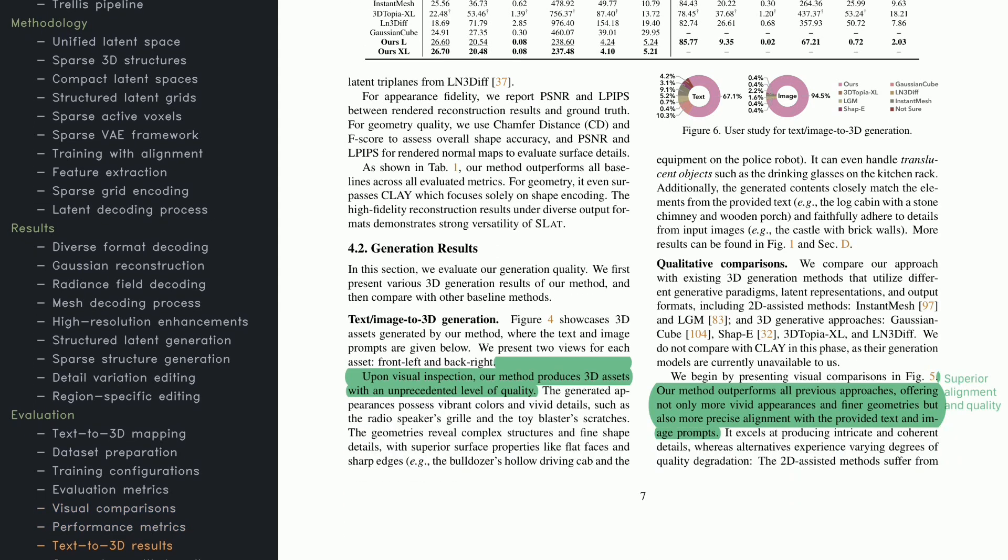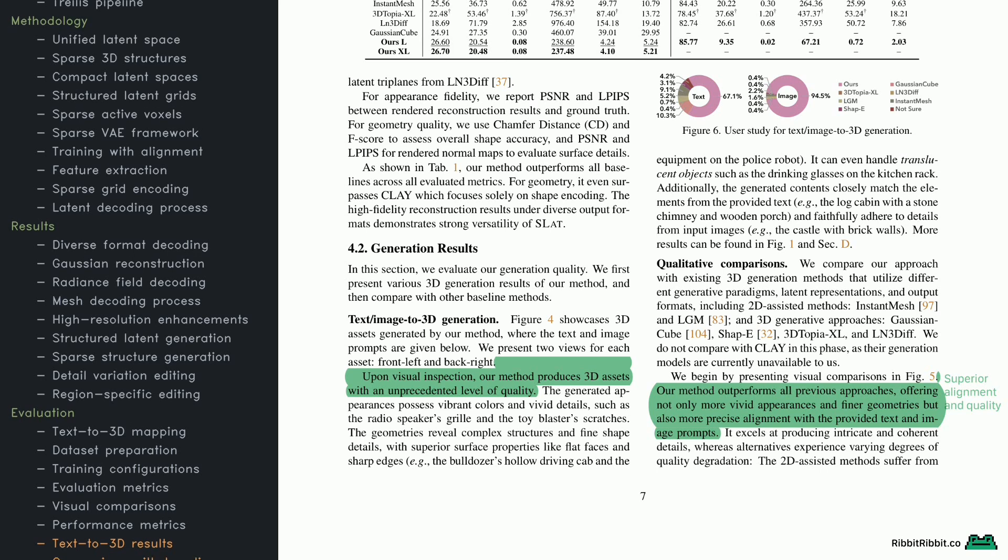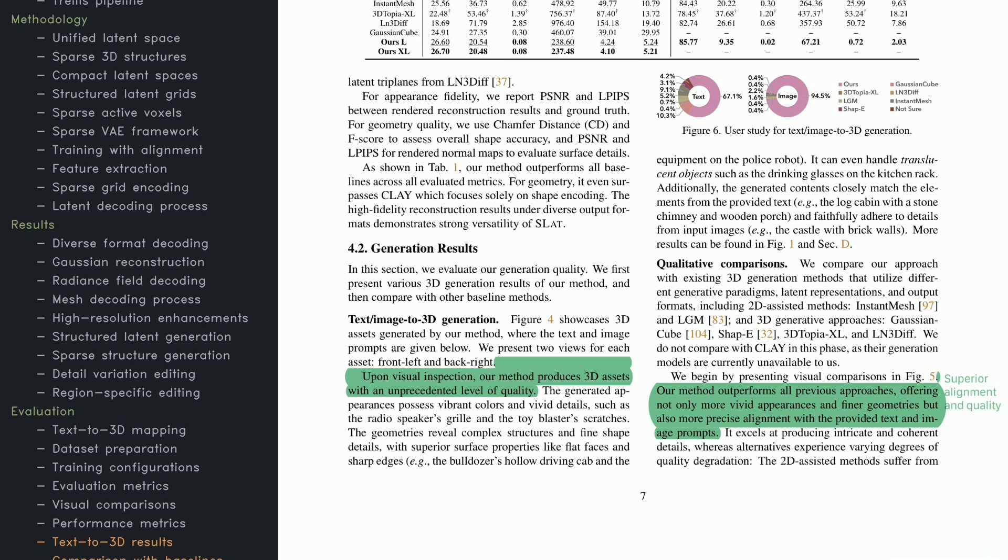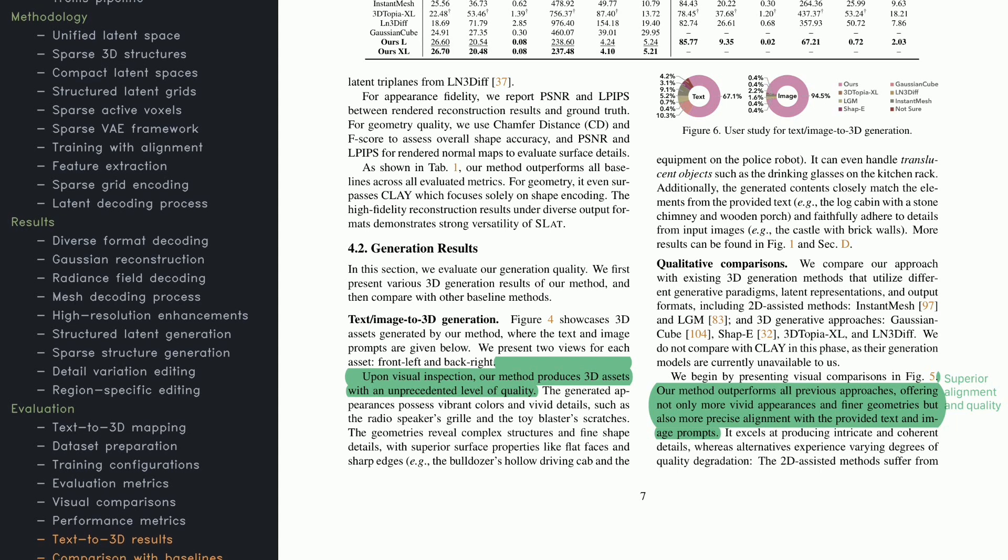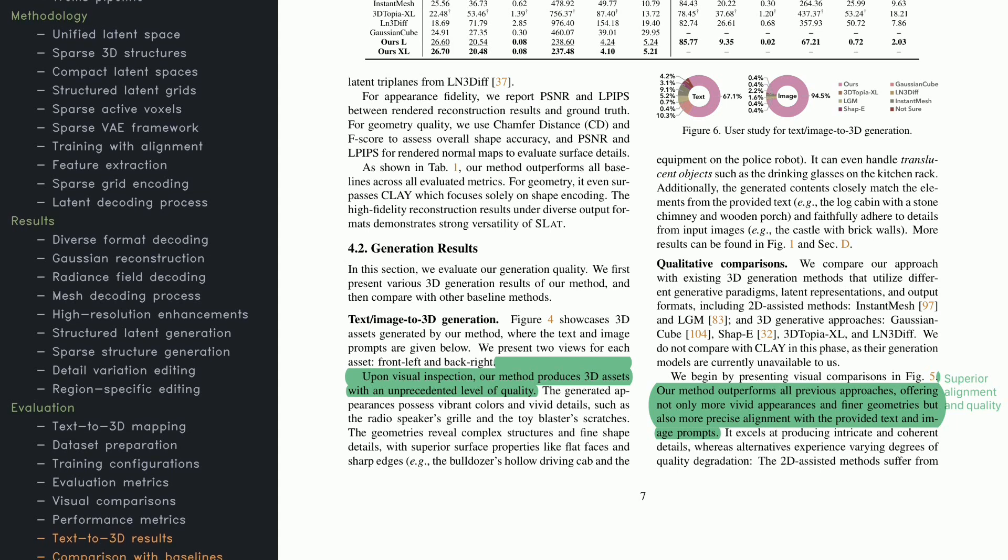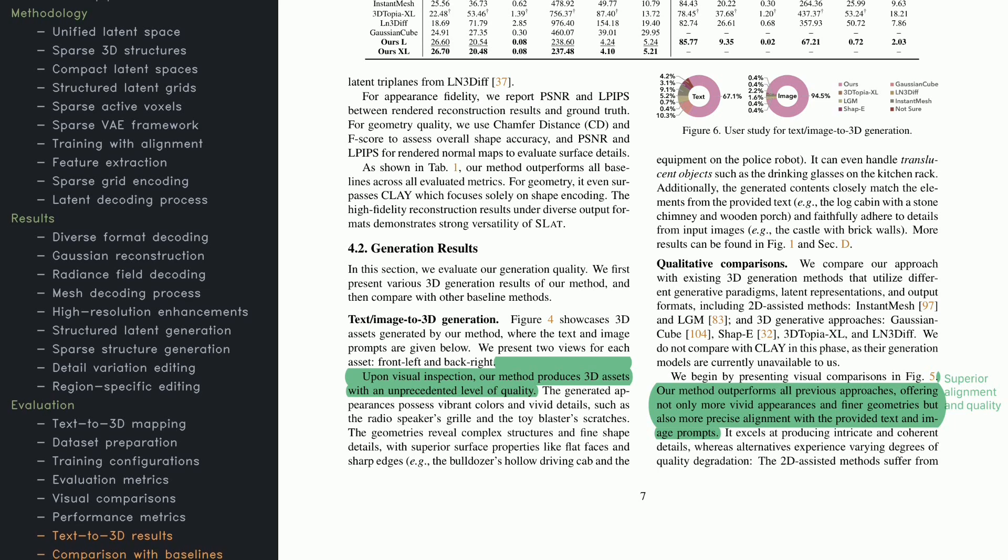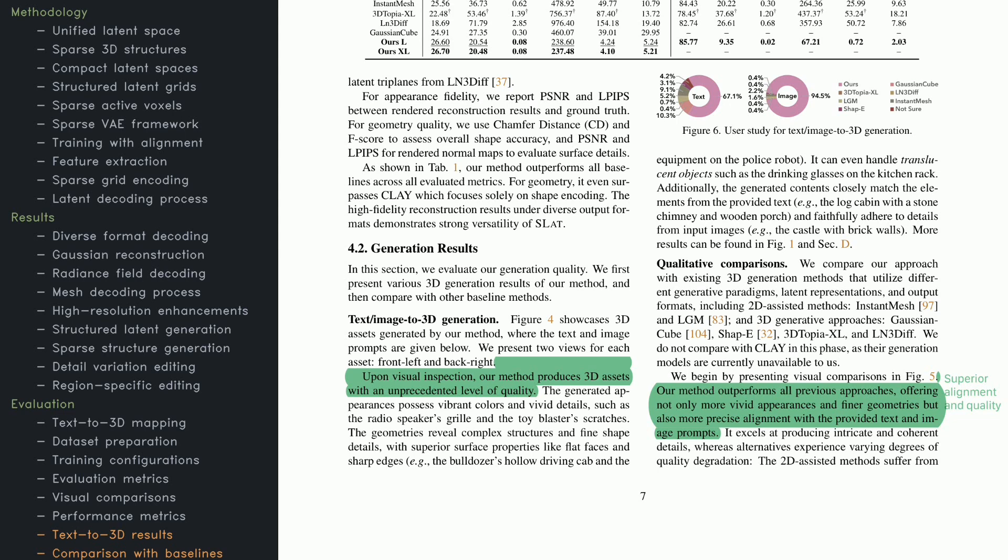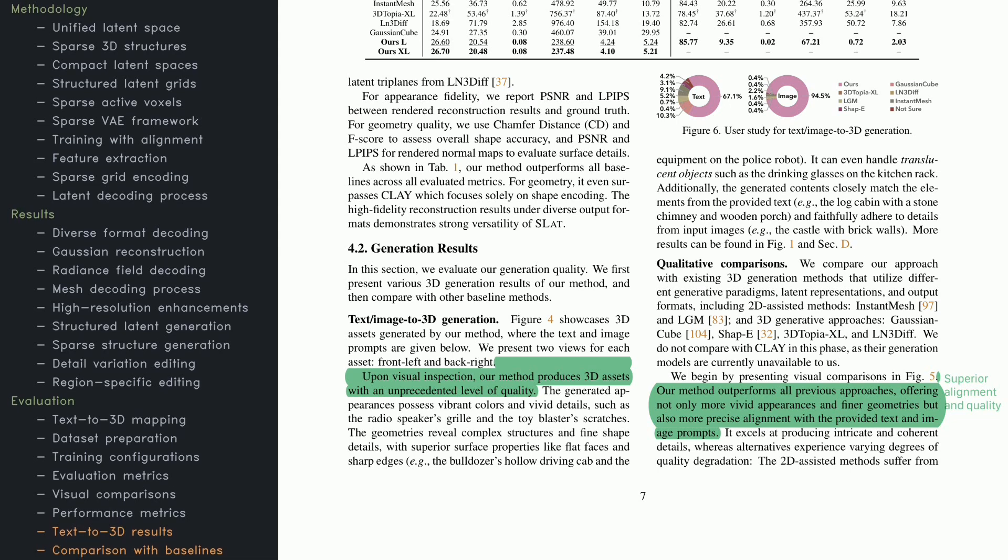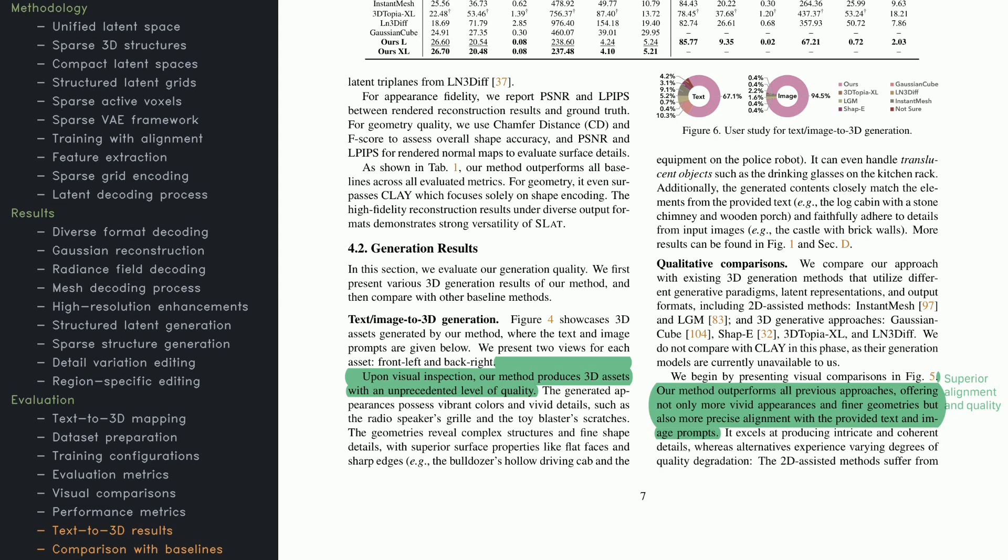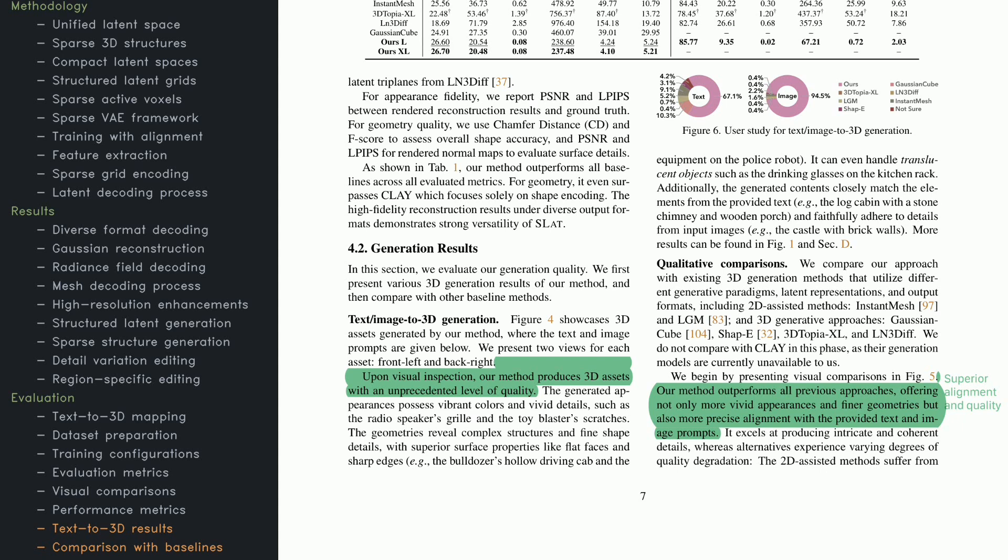You'll also see examples where the system excels at fine detail. For instance, it handles intricate designs like a radio grill or the edges of a bulldozer with very few mistakes. Compared to other methods, alignment with text prompts is consistently strong. Some competing techniques might lose detail or produce odd surface artifacts. Here, the geometry is coherent and the surface details look sharp. This reinforces the method's adaptability, whether the user wants precise, high-fidelity text-to-3D generation or simpler shapes that require less detail.